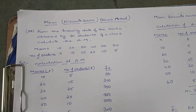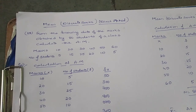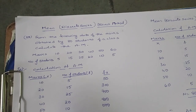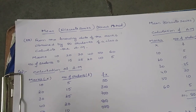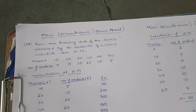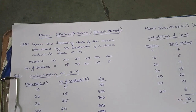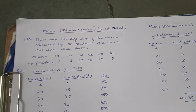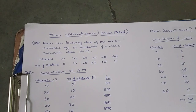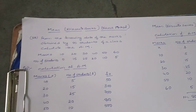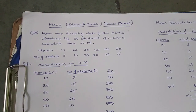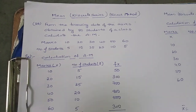So 10 marks were obtained by 5 students, 20 marks by 15 students, 30 marks by 25 students, 40 marks by 20 students, 50 marks by 10 students, and 60 marks by 5 students. They have taken the whole class as a group and divided marks accordingly — they have not given marks individually. By this we can say it is a discrete series.